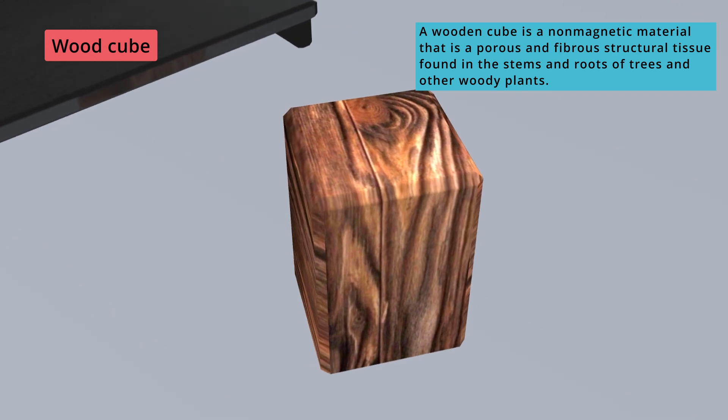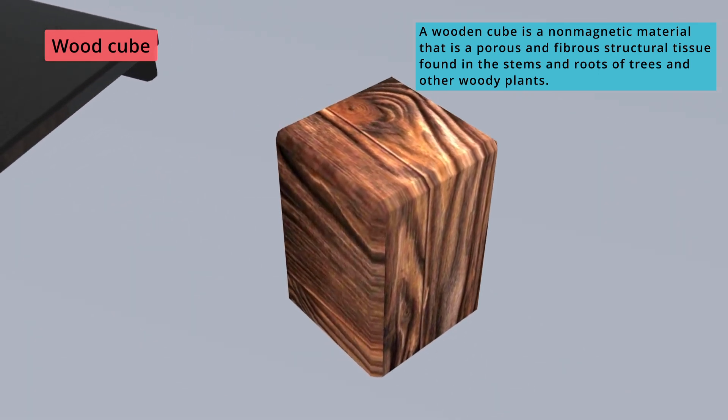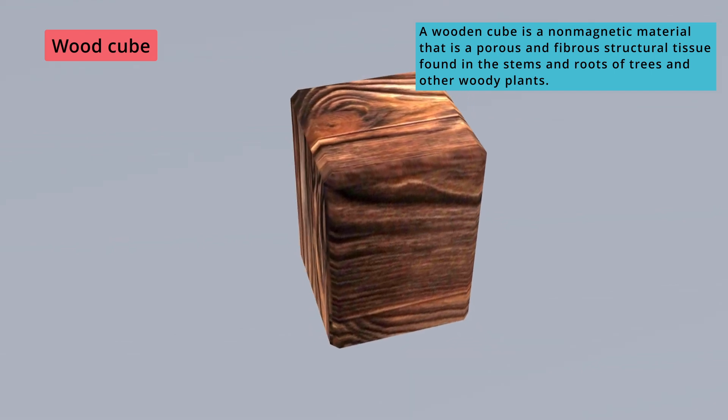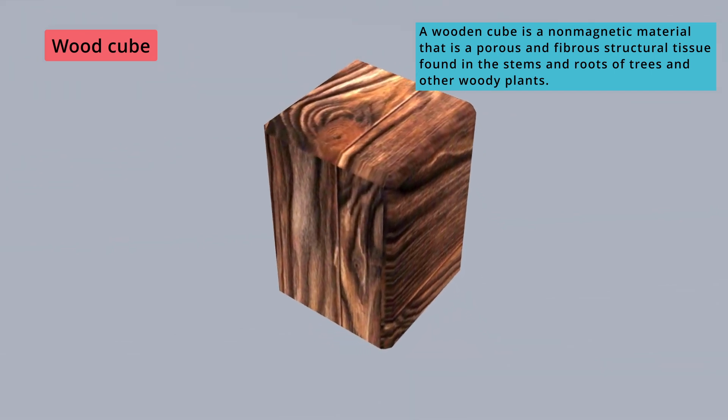Wood cube. A wooden cube is a non-magnetic material, that is, a porous and fibrous structural tissue found in the stems and roots of trees and other woody plants.